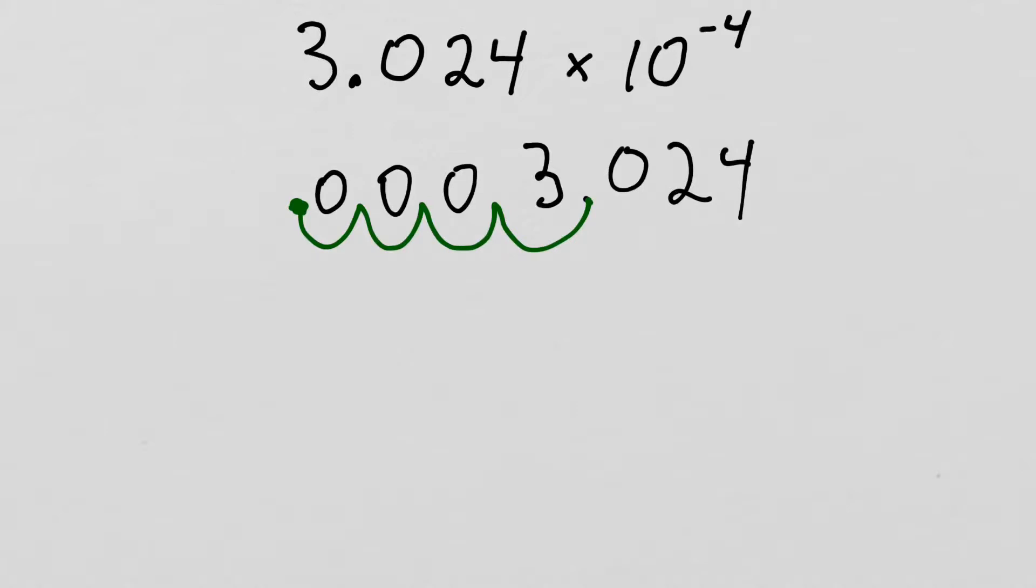Okay, now because that's a little bit messy, I'll rewrite it and I'll add a zero in front because that's the typical way of writing. And our zero, zero, zero, three, zero, two, four.